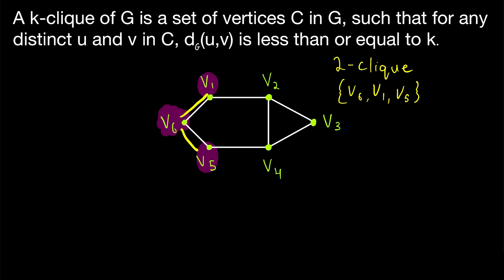Because although the distance between v5 and v1 is not equal to one, it is equal to two. And thus it's less than or equal to two. And so we can include them in a two-click with the vertex v6. If we pick any two vertices in this two-click, the distance between them is less than or equal to two. That's what makes it a two-click.